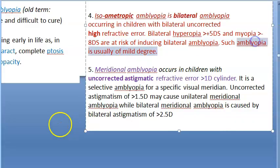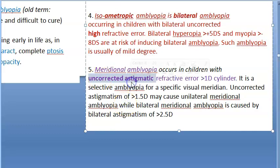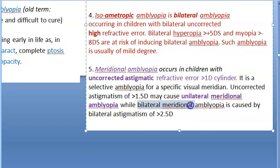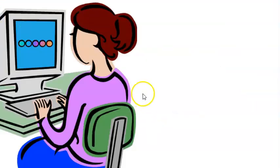Meridional amblyopia is because of uncorrected astigmatism. Even if astigmatism is just greater than 1.5 diopters, the patient can have unilateral meridional amblyopia — amblyopia in that meridian of astigmatism. Bilateral meridional amblyopia is caused by bilateral astigmatism. So meridional amblyopia can be unilateral or bilateral.